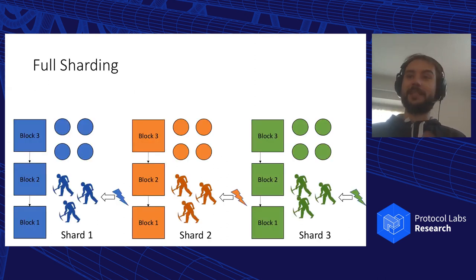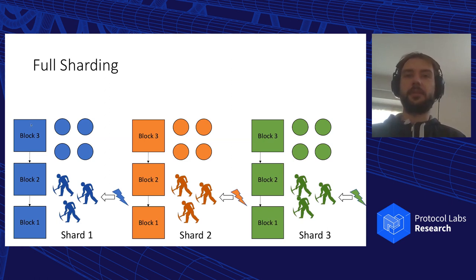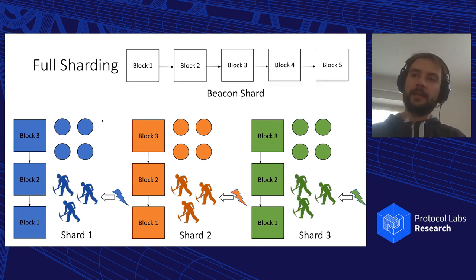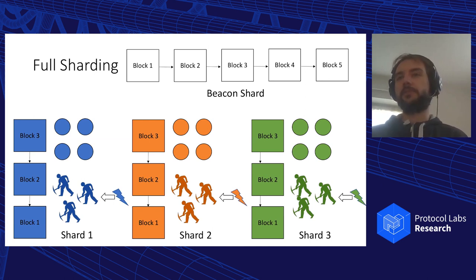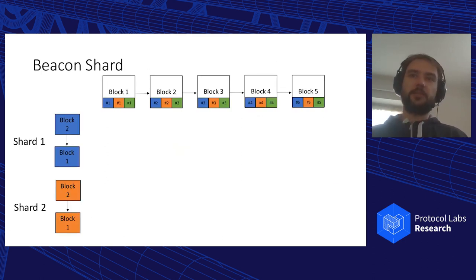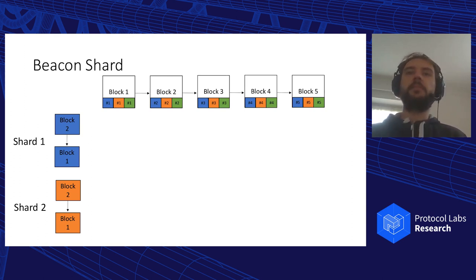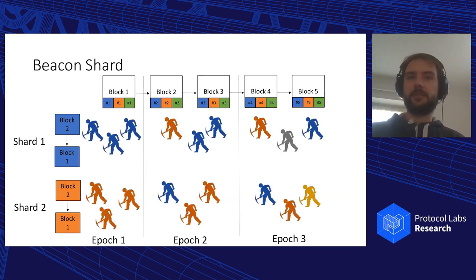That's why sharding was proposed as a solution. In sharding, we split the blockchain into groups so that every single shard has its own chain of blocks, its own miners, its own transactions, and holds a subset of state. The hope is that if one chain can support a specific amount of transactions, adding more chains allows us to scale the blockchain almost arbitrarily. Quite often, sharded blockchains also have a beacon shard, responsible for coordination and storing block headers of every single shard for synchronization, as well as assignment of miners to shards.